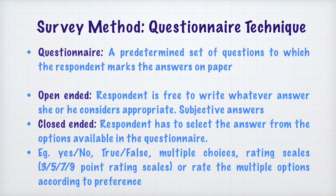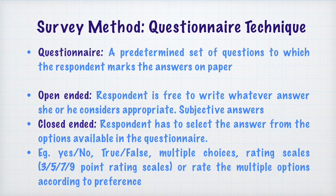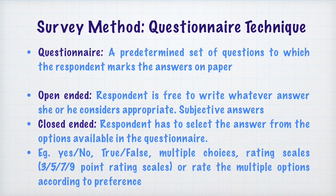The second technique of gathering data in a survey is the questionnaire. A questionnaire is a predetermined set of questions to which the respondent marks the answer on paper. Questionnaires can be open-ended or closed-ended. An open-ended questionnaire allows the respondent to write whatever answer they consider appropriate — like subjective answers. In closed-ended questionnaires, respondents can respond only in specific ways, such as multiple choice questions.